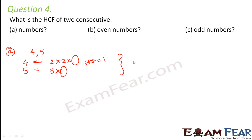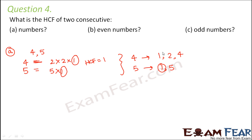Even by the factors method: the factors of 4 are 1, 2, and 4; the factors of 5 are 1 and 5; so the common factor is 1, and the highest common factor is 1. By both methods, the HCF of 2 consecutive numbers — whether it is 4 and 5, 15 and 16, or 99 and 100 — will always be 1.